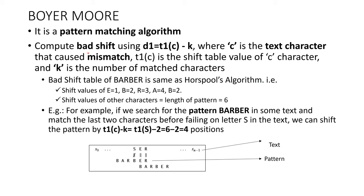Initially we will compute the bad shift table using this formula: D1 = T1(C) minus K, where C is a text character that has caused the mismatch, T1(C) is the shift table value of the character C, and K is the number of matched characters. Let us see an example. Suppose you want to search for a pattern called 'Barber'. Computing the bad shift table for Barber is same as that of Horspool. We will start with E. E is at a distance of 1, so E equals 1.